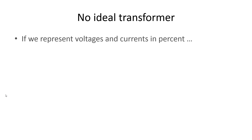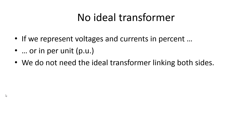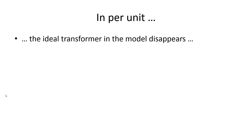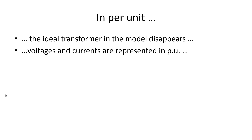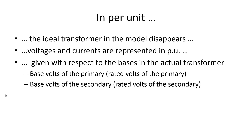Conclusions: if we represent voltages and currents in percent or in per unit, we do not need the ideal transformer linking both sides. This is no minor gain when we need to solve a national electric power grid that has thousands of transformers in it, or even in a humbler exam-type circuit with three or four transformers. When we use a per-unit system, ideal transformers in models disappear.